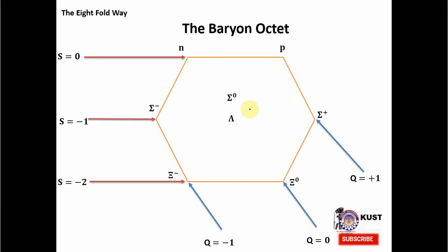But since it is an octet, we need to put 2 more extra particles, and we can do that by putting them into the center of this hexagon, that is sigma naught and lambda. They will get the charge from this slanted line and strangeness from this middle line. In this way, Gell-Mann was able to classify, and he called this a baryon octet, these 8 particles into one group.